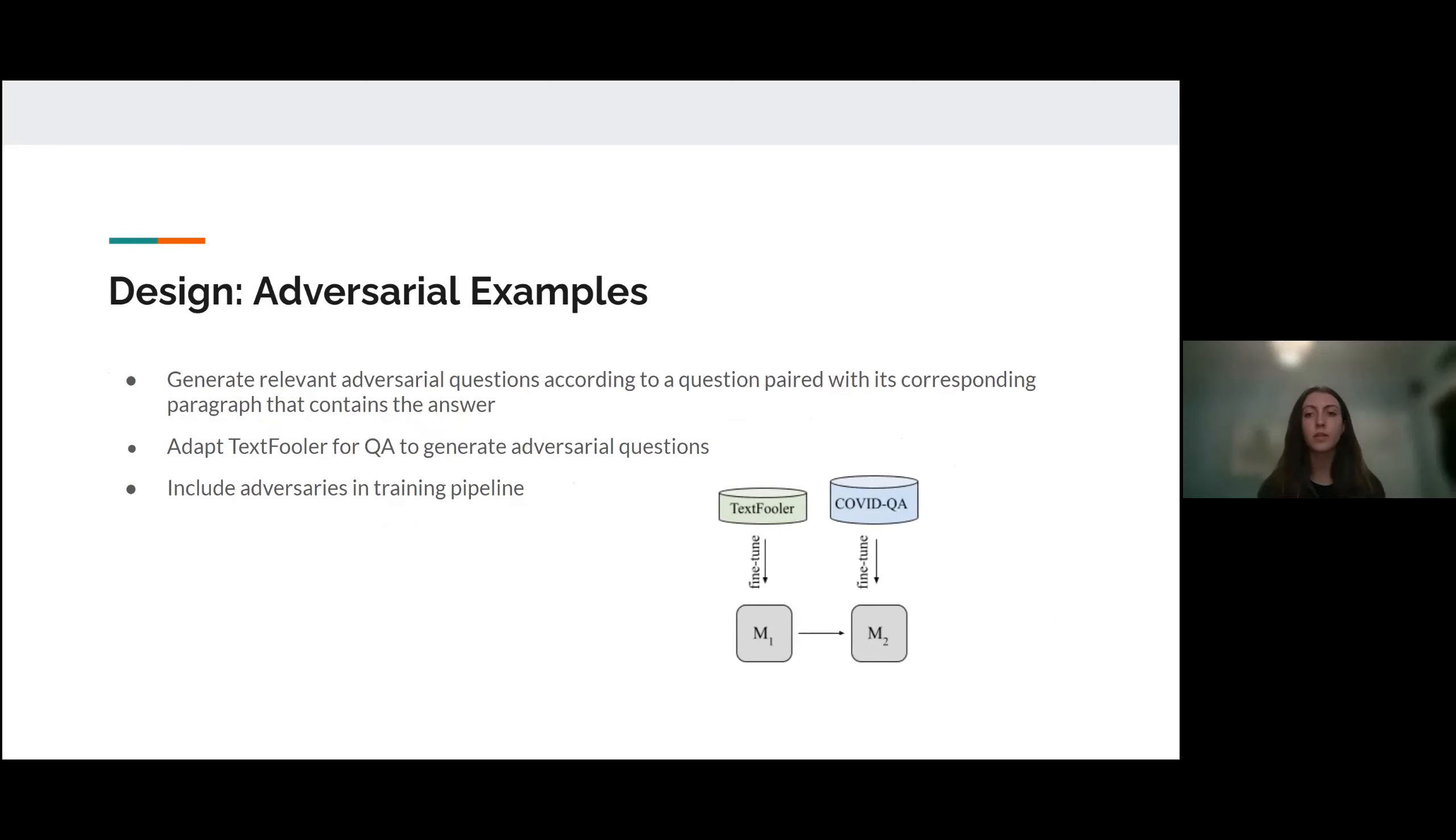So we generated relevant adversarial questions according to a question paired with its corresponding context containing the answer. To do this, we adapted TextFooler for QA as it was originally used for classification and entailment tasks. And we used it to generate adversarial questions to include in the training pipeline of our model.